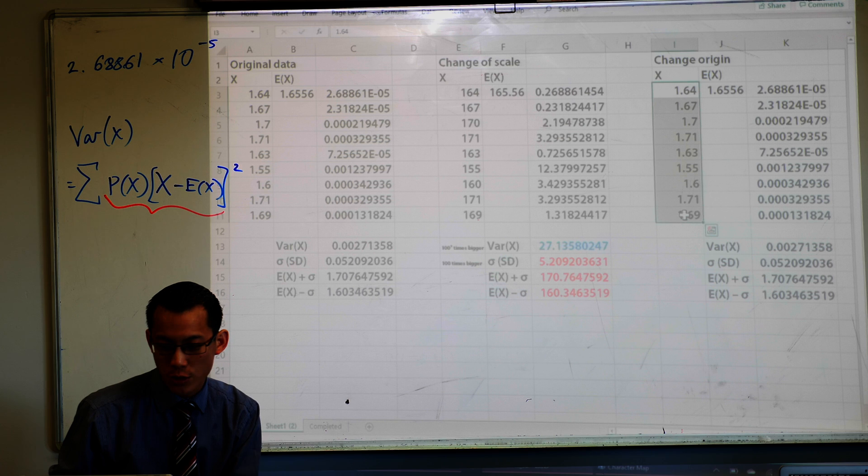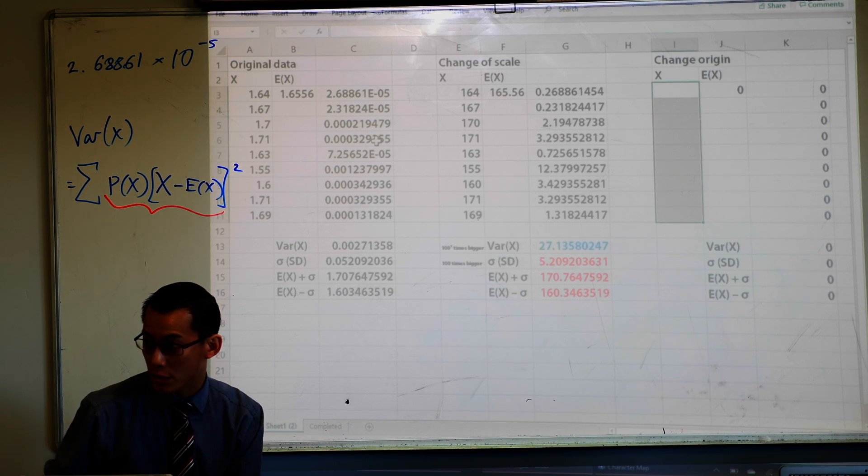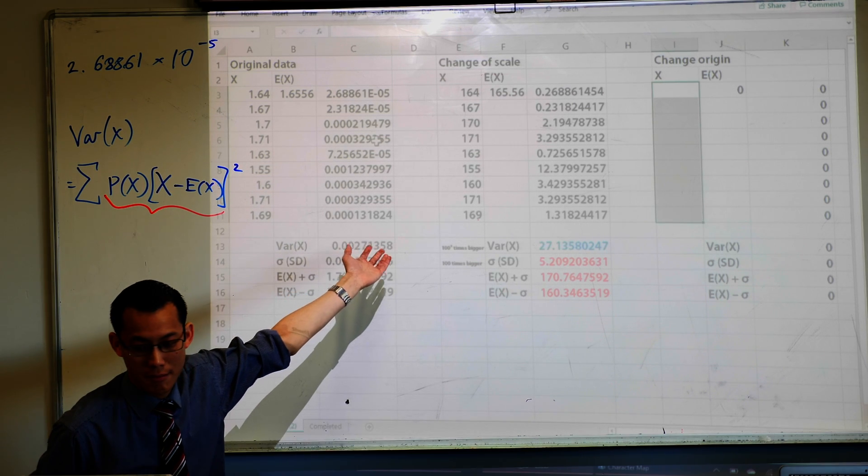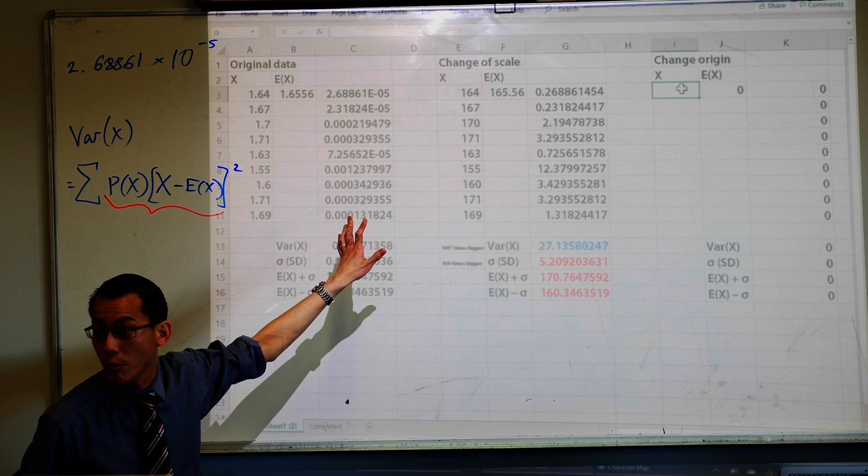So now I want your actual heights. I don't want those original ones, what am I going to do to take away that two centimeter heel? What am I going to calculate? Original ones minus two, right?